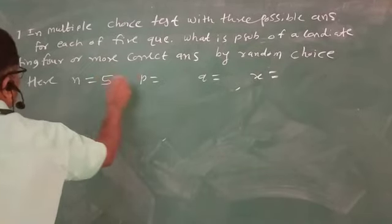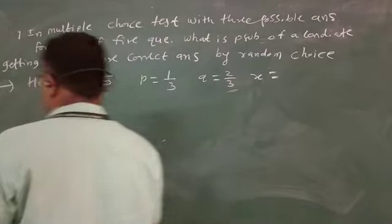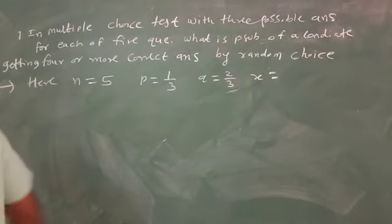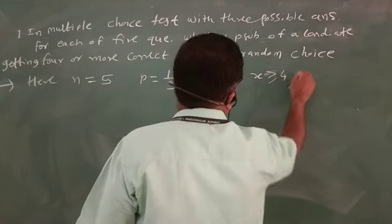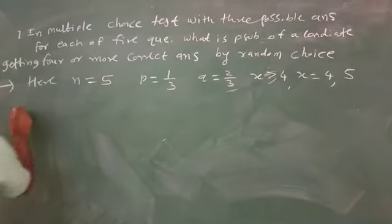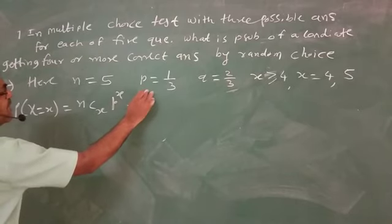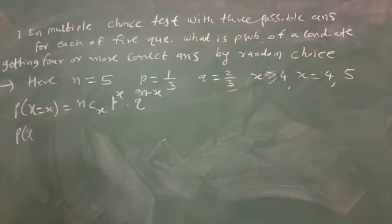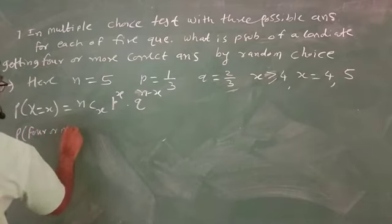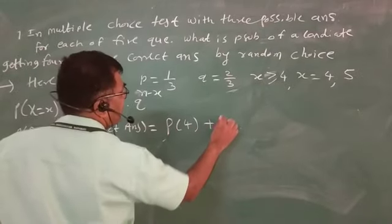N equal to 5, P equal to 1 by 3, Q equal to 2 by 3. X equal to greater than or equal to 4, that is x equal to 4 or 5. Using P(X = x) = nCx × p^x × q^(n−x), P(4 or more correct answers) equal to P(4) plus P(5).